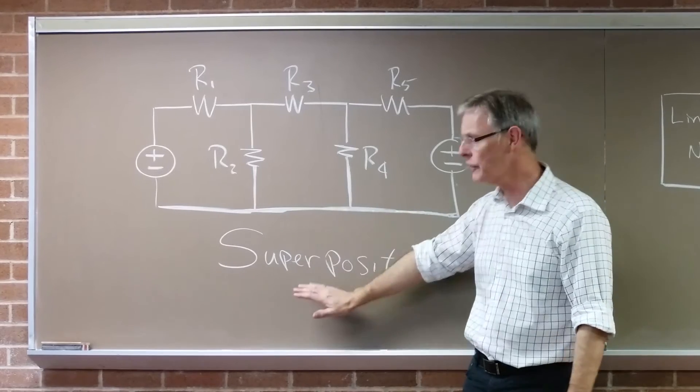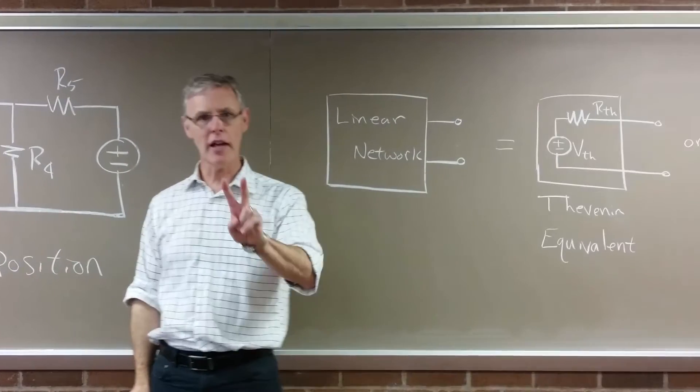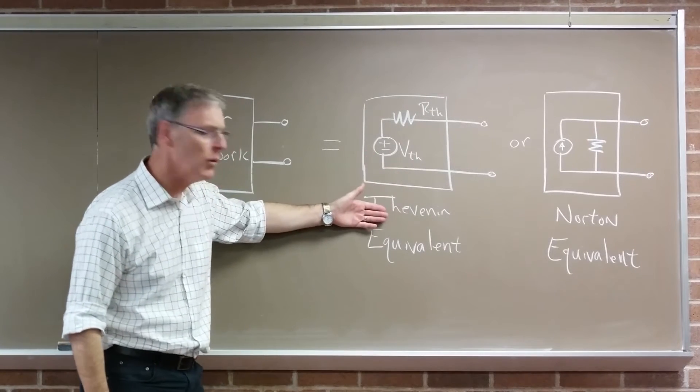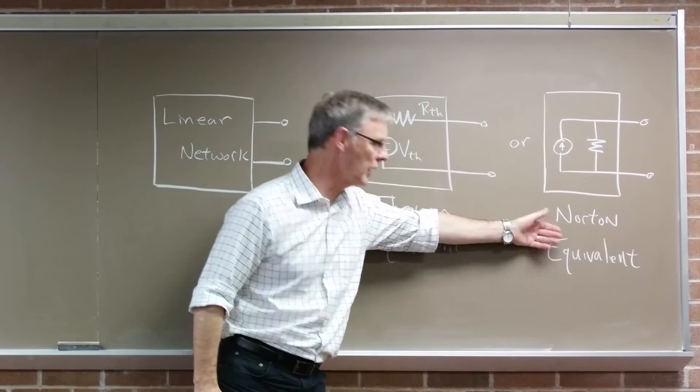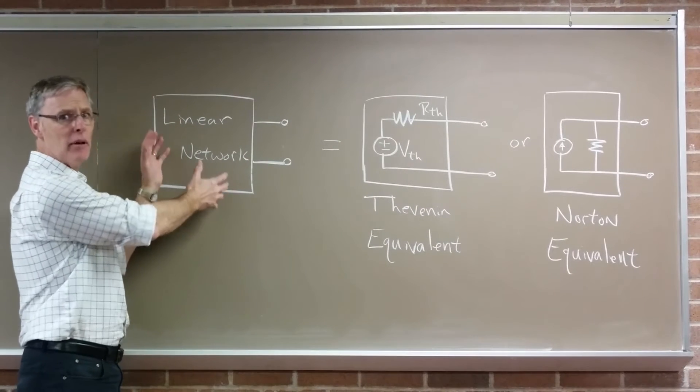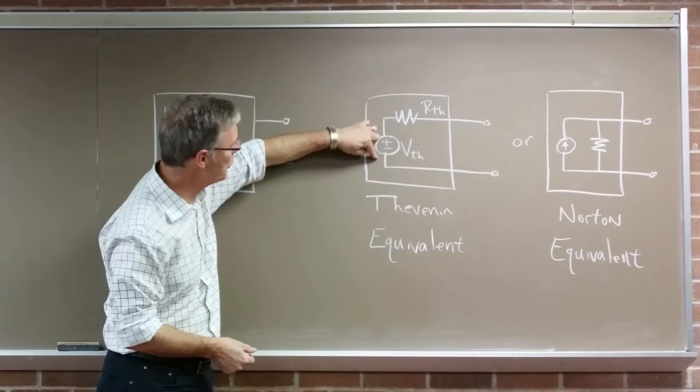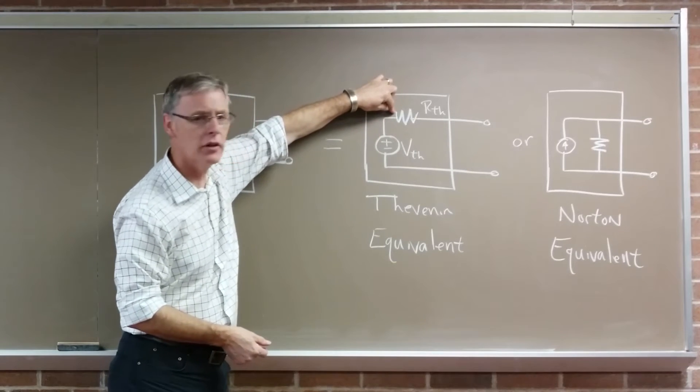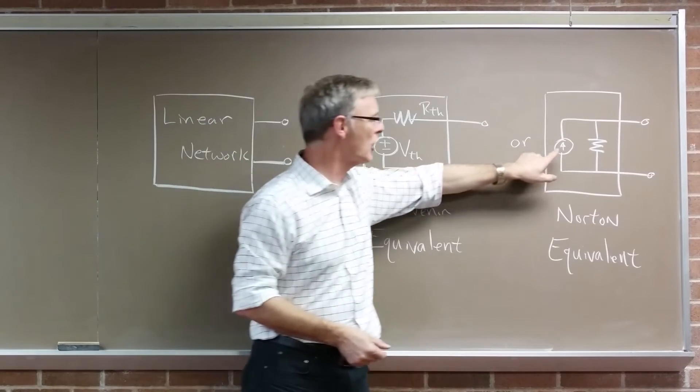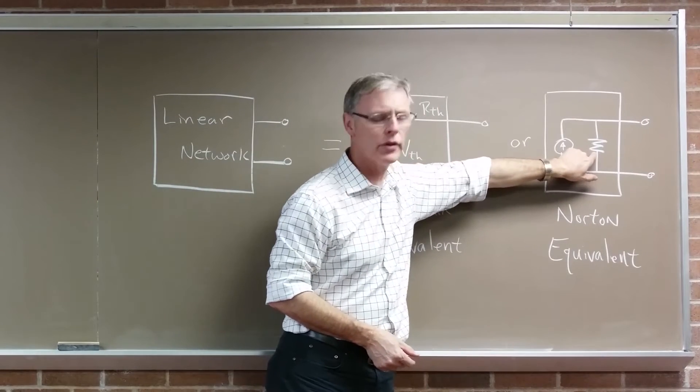Superposition is the first part of the lab. The second part of the lab is the network theorems of equivalents. We have a Thevenin equivalent and we have a Norton equivalent. A Thevenin equivalent says that any linear network can be represented by a voltage source in series with a resistor. The Norton equivalent says that any linear network can be represented by a current source in parallel with a resistor.